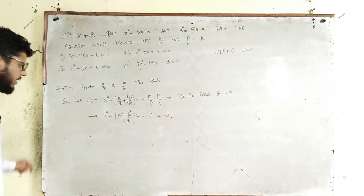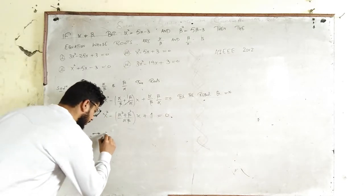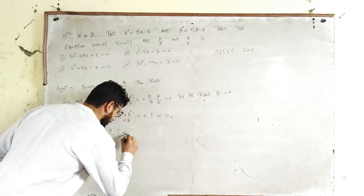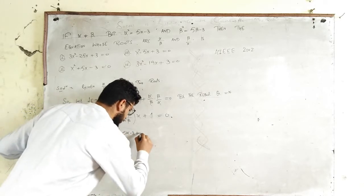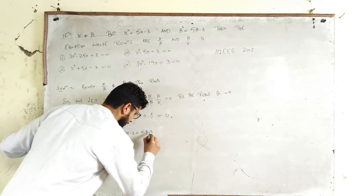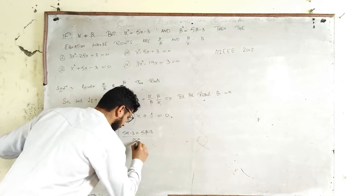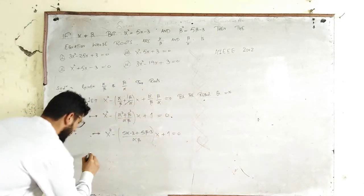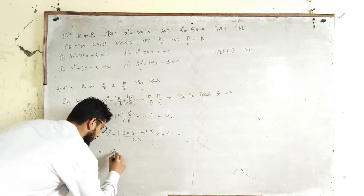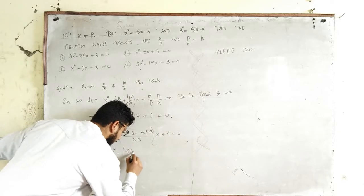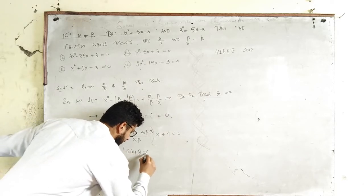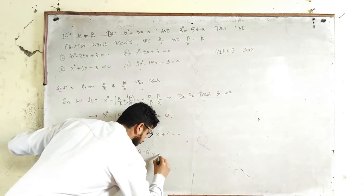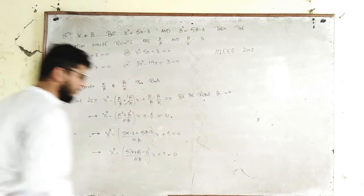Now our focus shifts to simplification. This implies x² minus, and in place of α² we substitute 5α minus 3, and in place of β² we substitute 5β minus 3, divided by αβ, plus 1 = 0. Further simplification gives: x² minus [5(α + β) minus 6] / (αβ) times x plus 1 = 0.